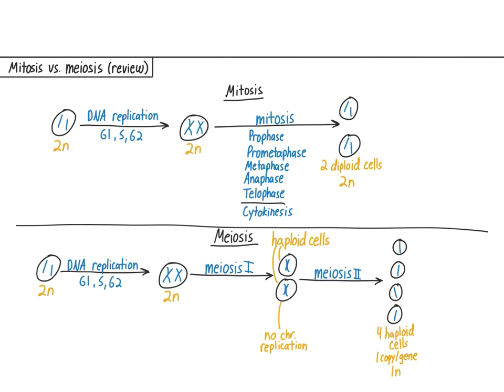As these two cells go through meiosis II, four cells are produced, also haploid. But now they only have one of each chromatid and one copy of each gene. Note that the production of four haploid gametes for each round of meiosis only occurs in human males. In males, these four cells become sperm. But in females, only three cells are produced, only one of which is a gamete — the egg. Okay, that's the end of our mini-review.